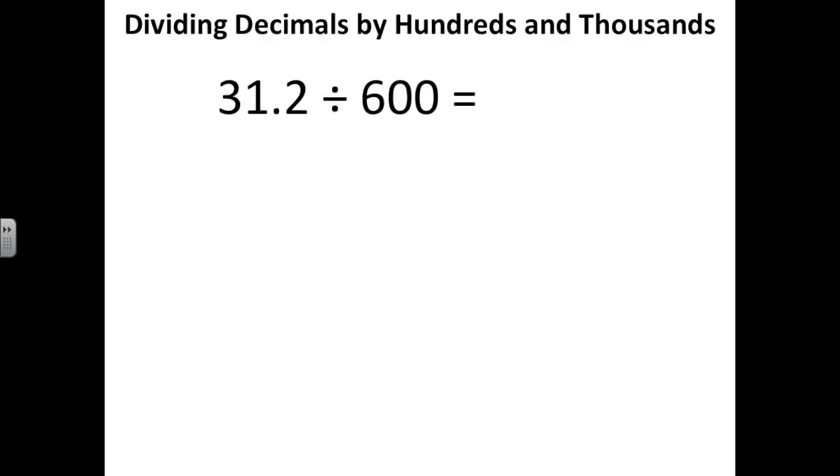So let's start with 31 and 2 tenths divided by 600. We worked on this in class when we divided by 10, so 10, 20, 30, 40, 50, etc. So this is going to work exactly the same. We're going to split up the 600 into 6 and 100. 6 times 100 equals 600.